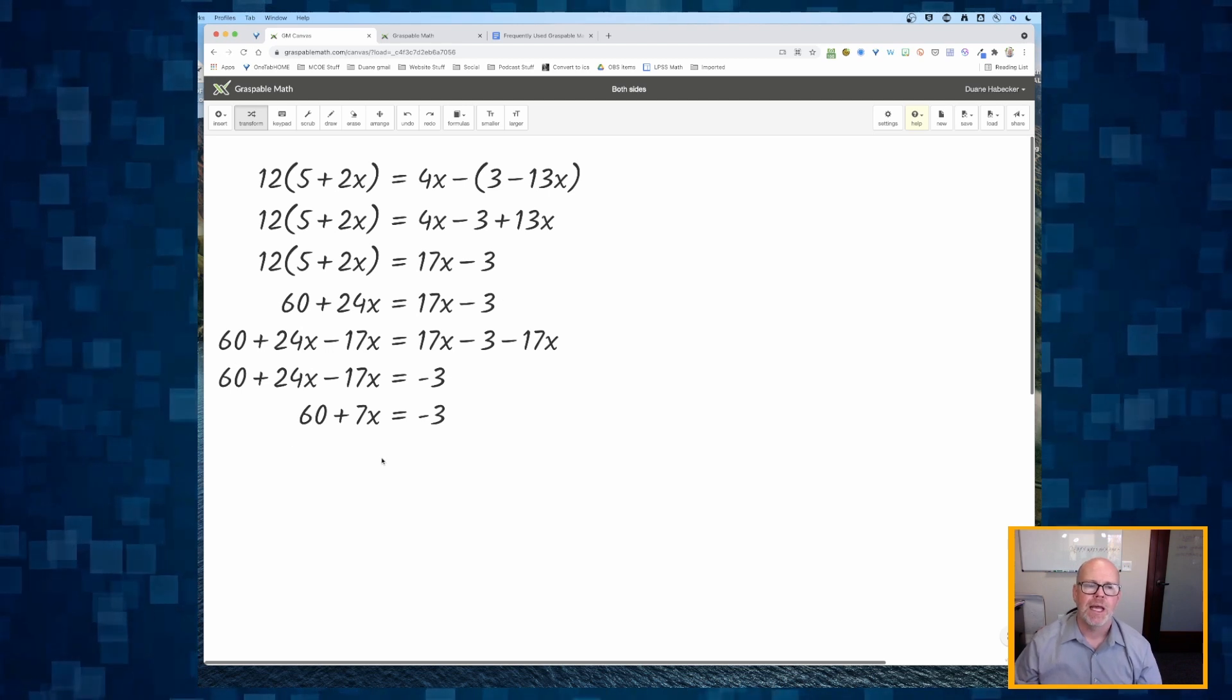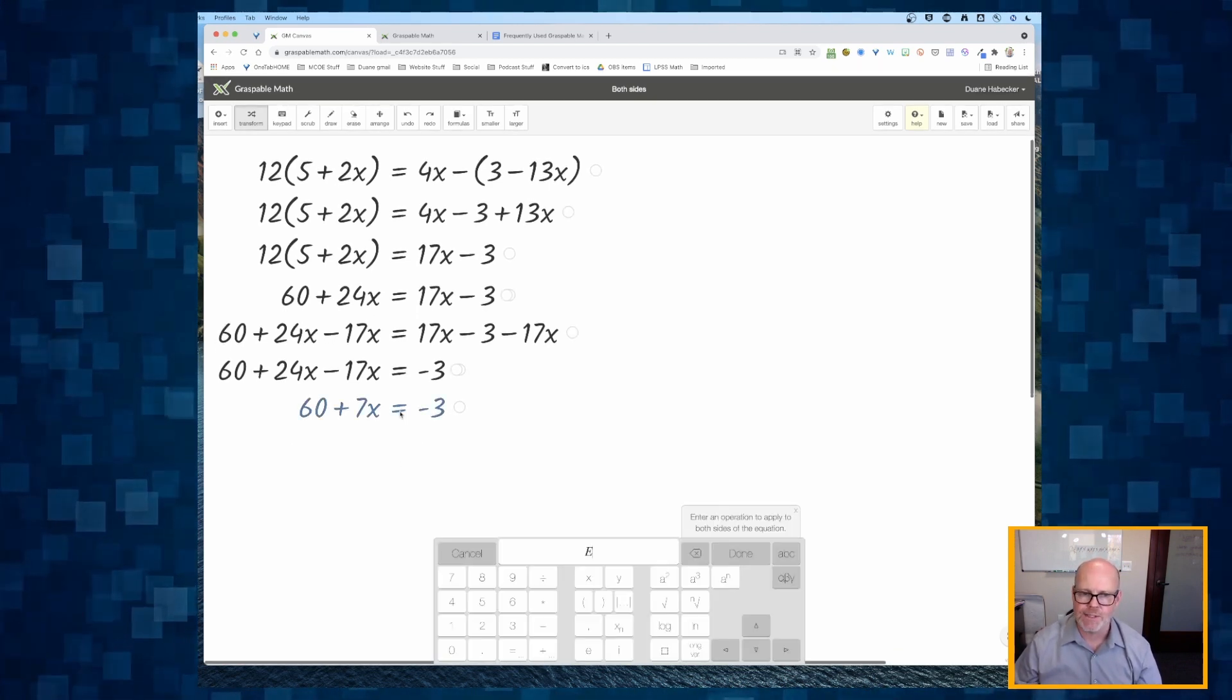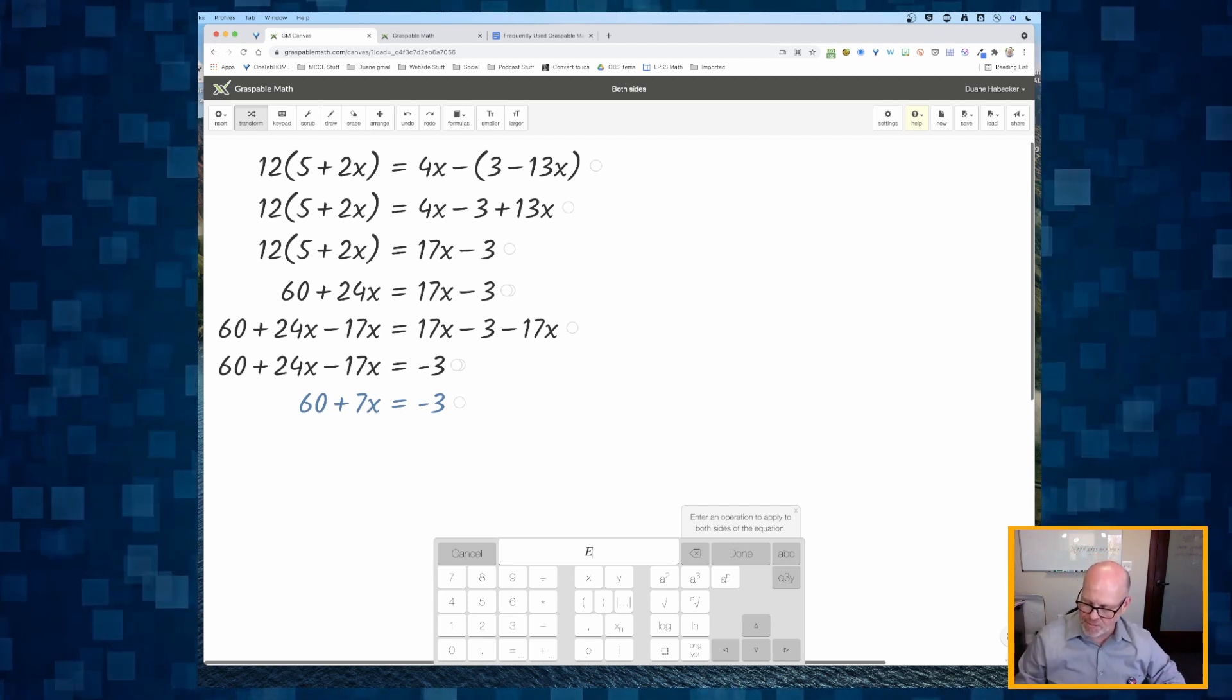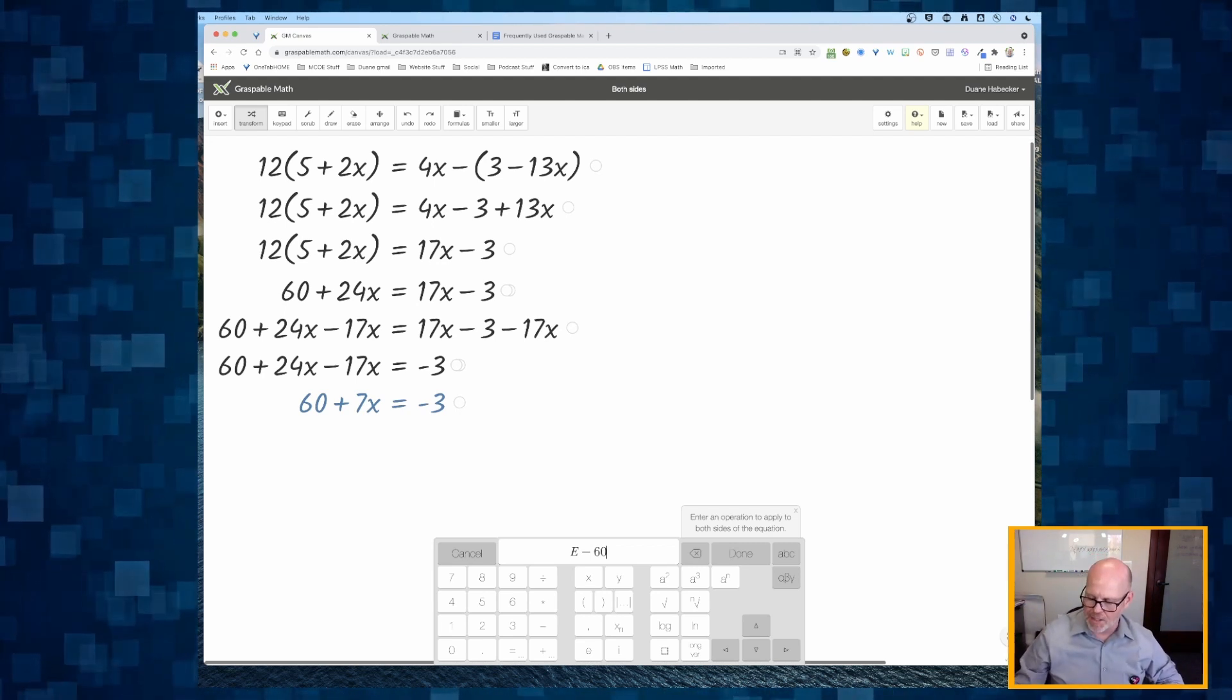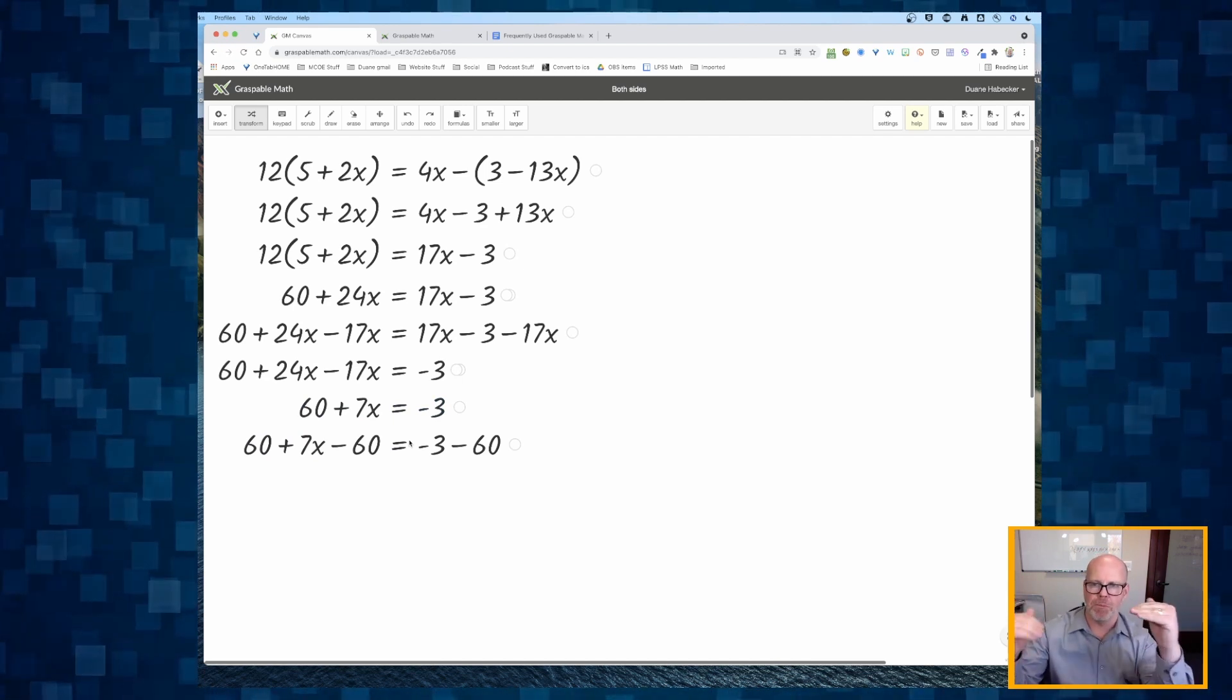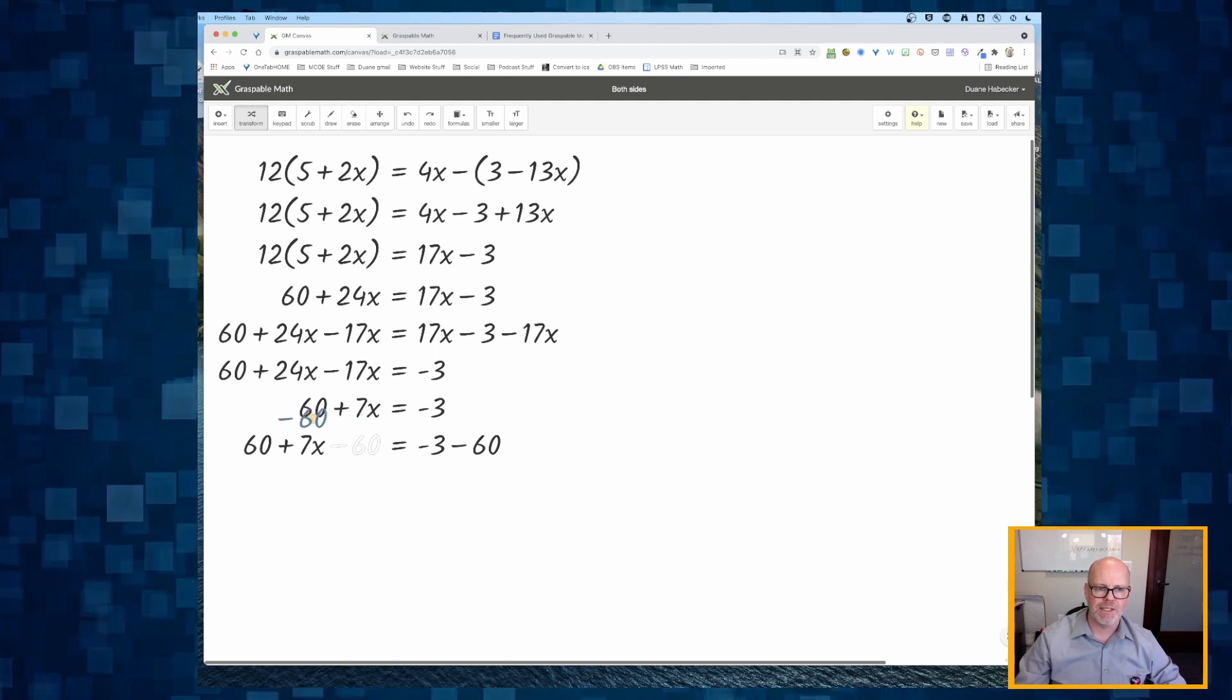If you're a teacher who does not like that kind of interface, I'm going to undo that. And I'm going to click and hold on my equal sign. It pulls up the keyboard editor and I'm going to subtract 60 from both sides of the equation. I'm going to click done.